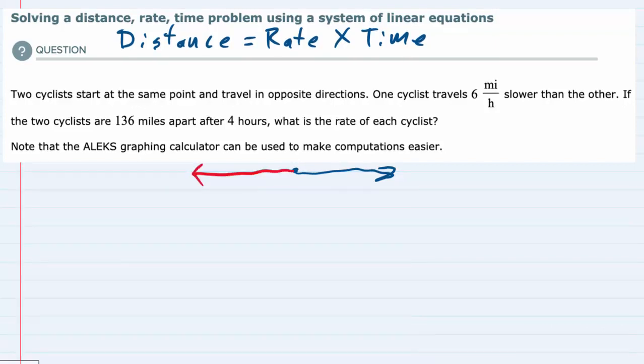One cyclist travels 6 miles per hour slower than the other one. If the two cyclists are 136 miles apart after 4 hours, what is the rate of each cyclist?